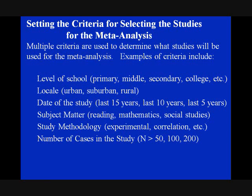Setting the criteria for selecting the studies for the meta-analysis. Examples of criteria include the level of a school: primary, middle, secondary, college. Locale: urban, suburban, rural. Date of the study: last 15 years, last 10 years, last 5 years. Subject matter: reading, mathematics, social studies. Study methodology: experimental, correlational. Number of cases in the study: n greater than 50, n greater than 100, n greater than 200.